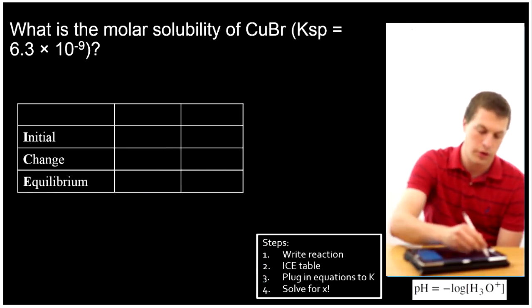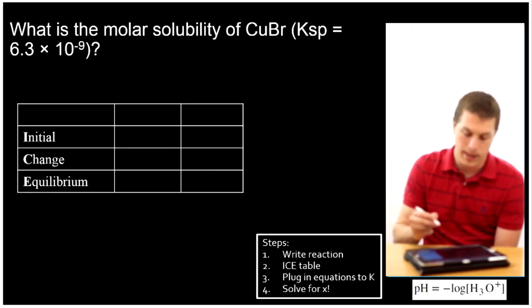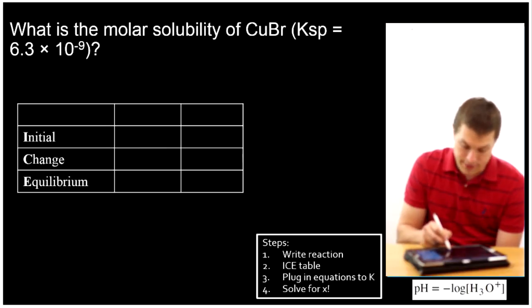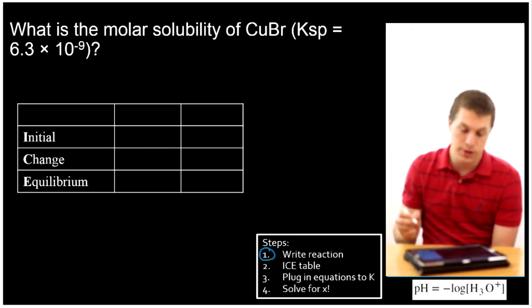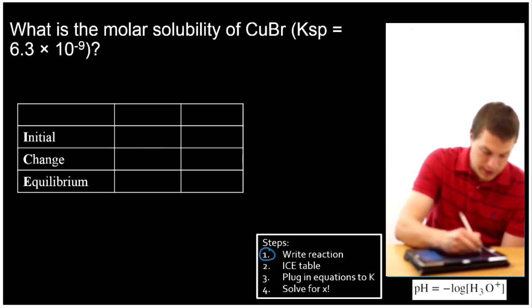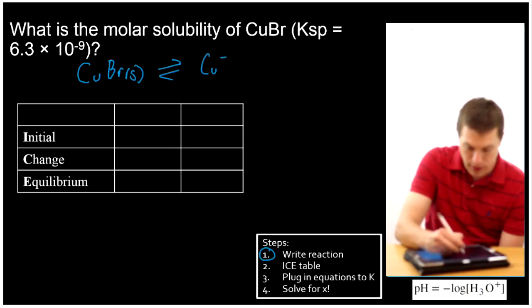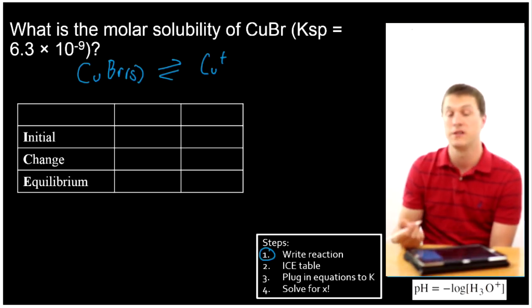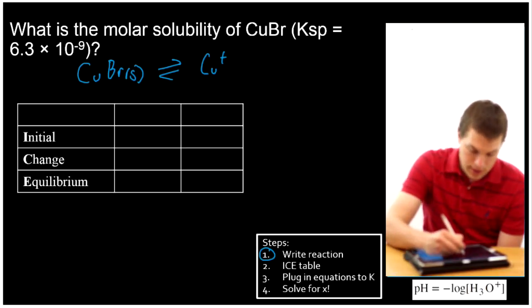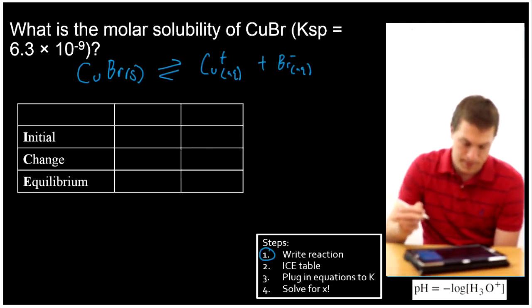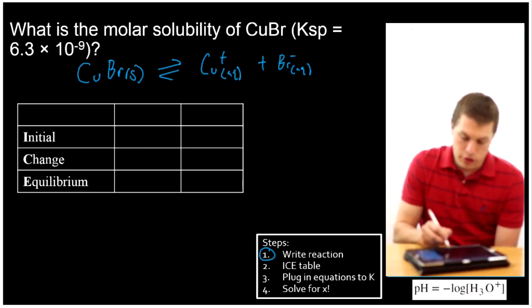All right, here we want to know the molar solubility of copper bromide. And it's copper 1 bromide in this case. And the first thing we're going to do is write our reaction. So we're going to have copper bromide, and that's solid. And that's going to go to copper plus, and we know it's plus because we know bromine is minus 1. And so that means that we have a copper 1 dissolved plus a bromine minus dissolved.